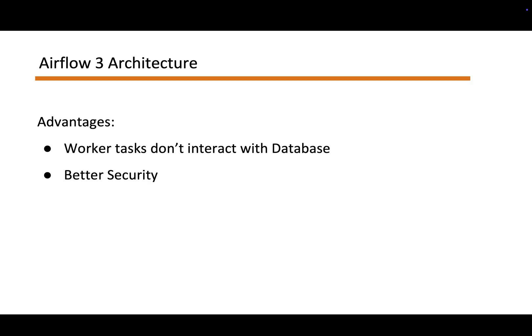Because workers are now API clients rather than database clients, security gets a meaningful boost. You can enforce authentication and authorization in one place, which drastically shrinks the radius of any compromised tasks, and apply network boundaries that were awkward in the previous architecture. The tasks only see the endpoints they need, not the whole database.